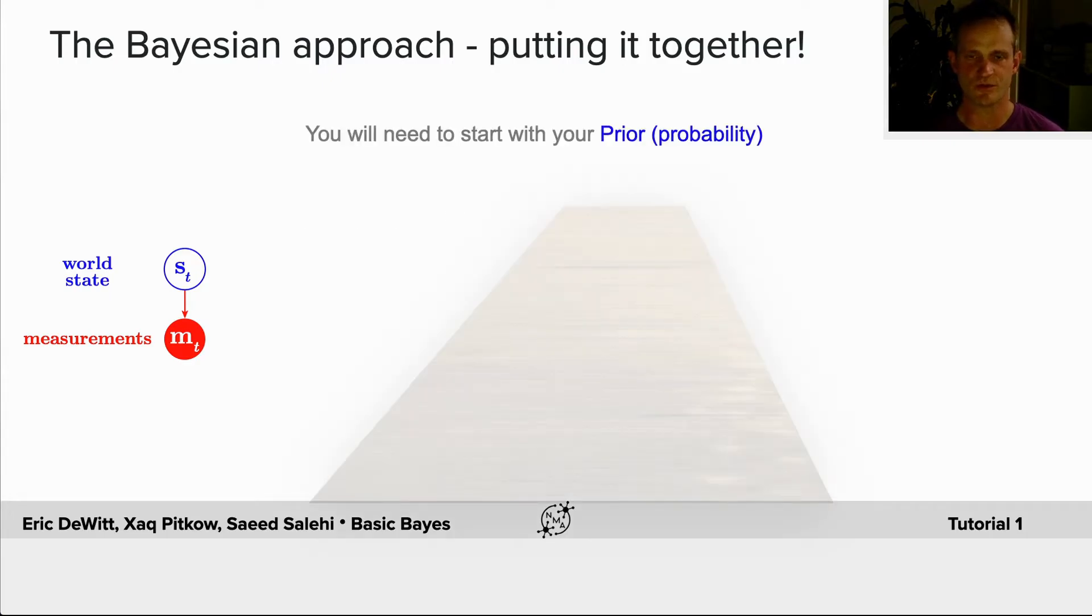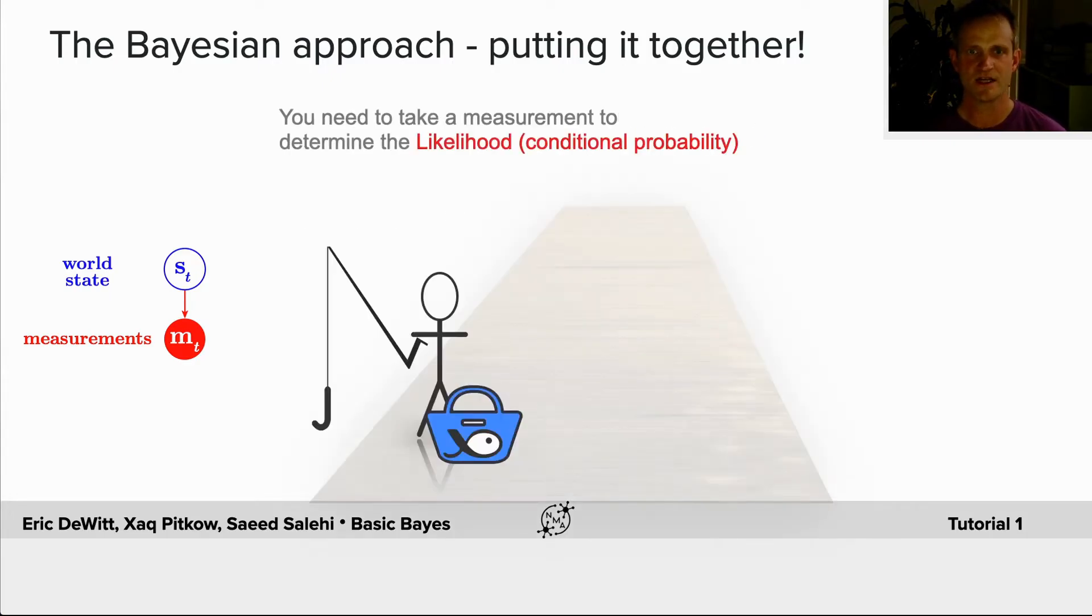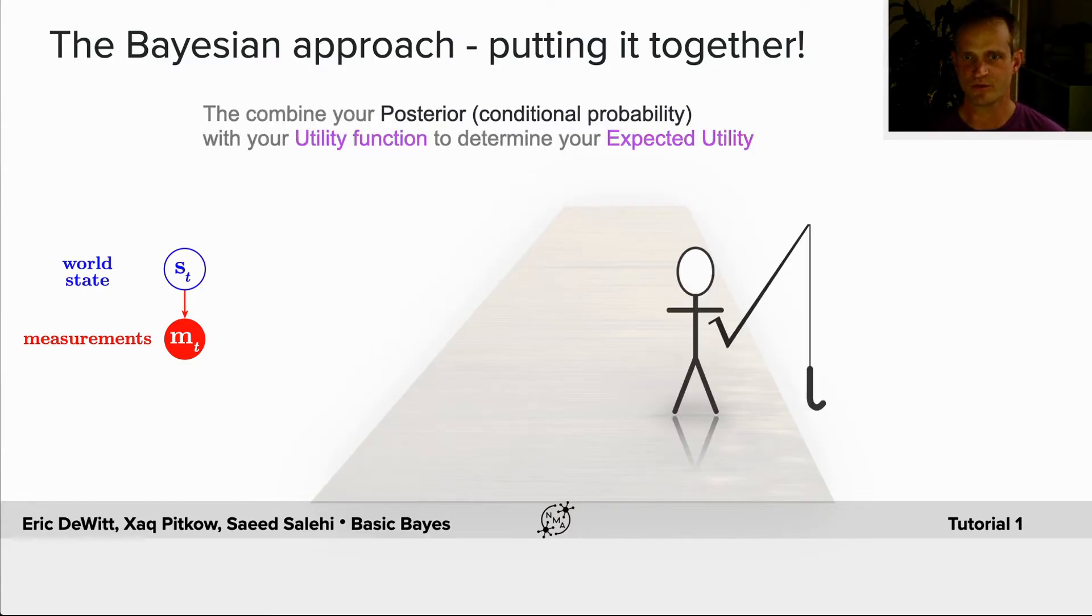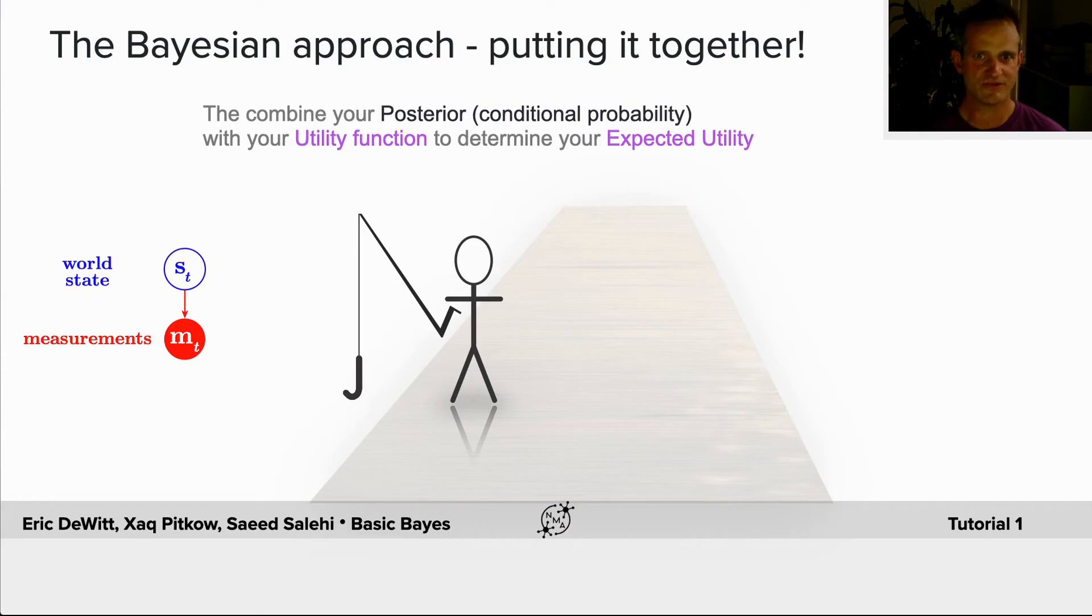To do that we're going to start with our prior probability, in this case an observation of somebody fishing and either catching a fish or not catching a fish. We're then going to determine whether we want to take an action on the right or the left, and to do that we're going to use the utility function to determine our expected utility.